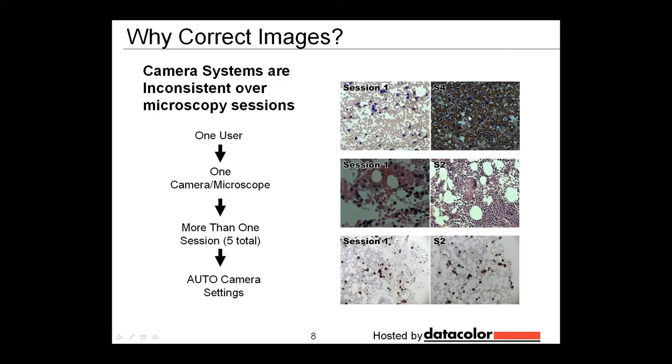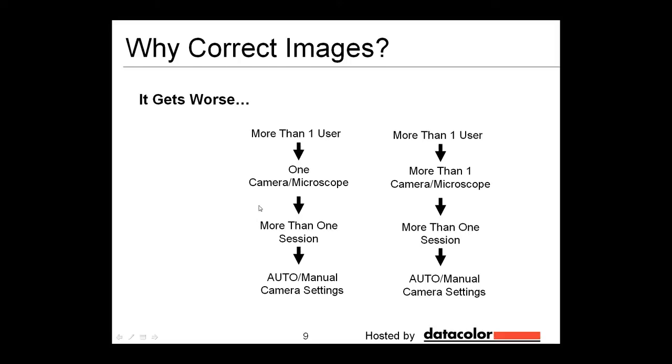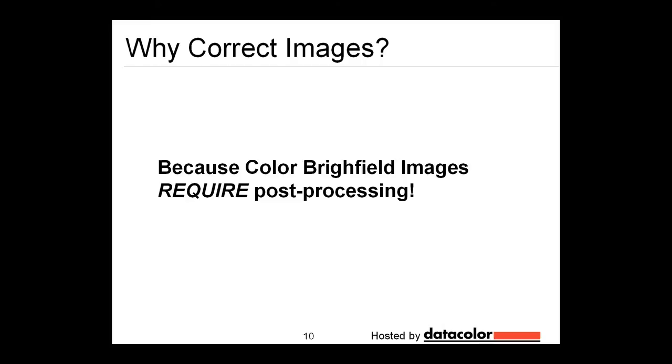It gets worse when I went and used auto camera settings. With auto settings, you run into the situation where the camera decides that the image is brighter than it really is, and so it darkens the exposure. So you can see in these instances that the images are underexposed. And it can get worse. What if you have more than one user on one camera microscope, more than one session, and you're using both auto and manual camera settings? Or what if you have more than one user and more than one camera microscope, more than one session, auto and manual camera settings? You can see that the inconsistency of images would absolutely be compounded by any one of these scenarios.